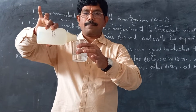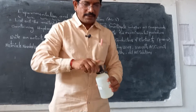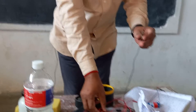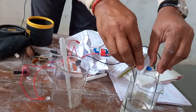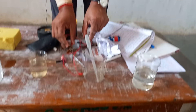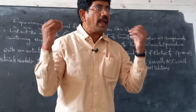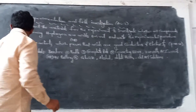Next, I am taking alcohol — ethanol, C₂H₅OH. Hydrogen is present here also. I am conducting the electrical conductivity test of alcohol. Observe the bulb carefully — the bulb is not glowing. It has hydrogen, but the bulb is not glowing because alcohol is not dissociated into ions in aqueous solution.